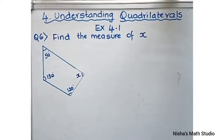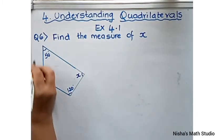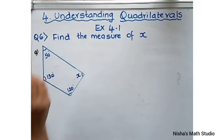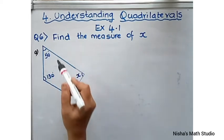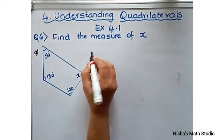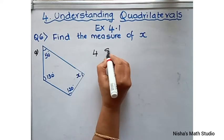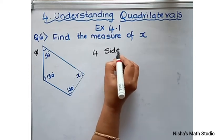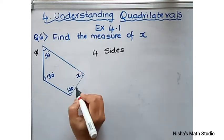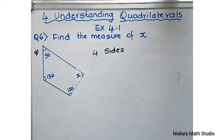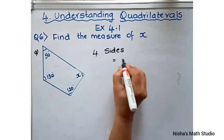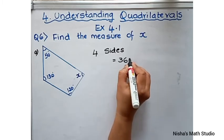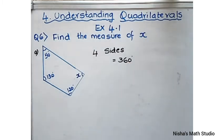Let's see question number 6, part A. The question says you have to find the measure of x. If you look at this figure, it is a quadrilateral because it has four sides. The sum of angles of a quadrilateral, as we have seen in our last questions, is equal to 360 degrees — that is, if you add up all the interior angles, they must sum to 360.